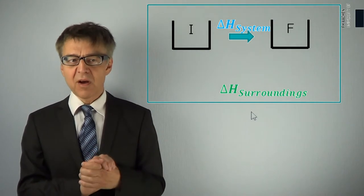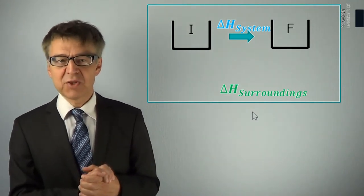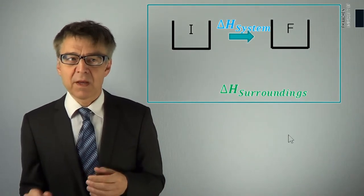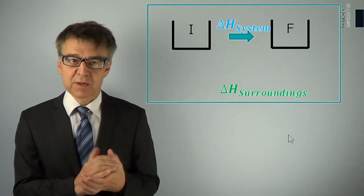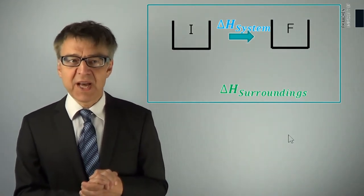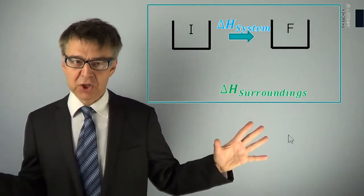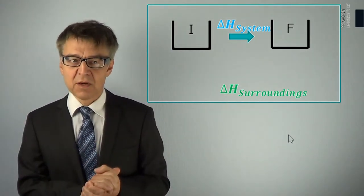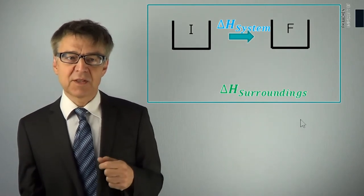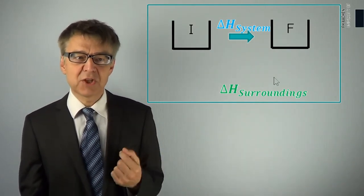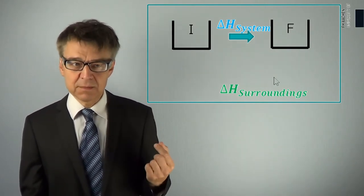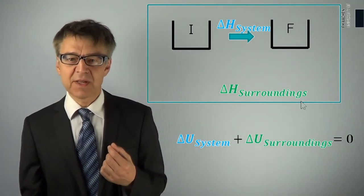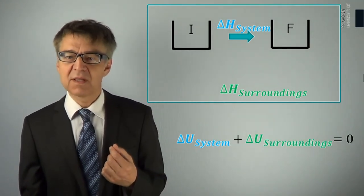The first law makes a statement about the energy changes that are possible in the universe. It is the concept of conservation of energy: the energy of the whole universe remains constant. For each process, the change in internal energy of the system plus the change in internal energy of the surroundings is zero.